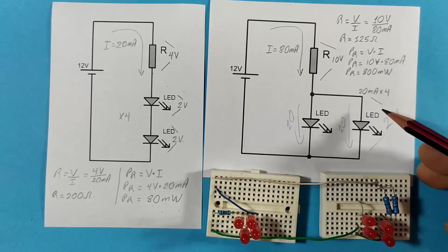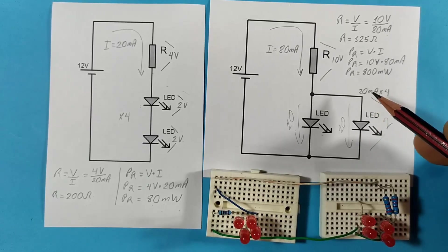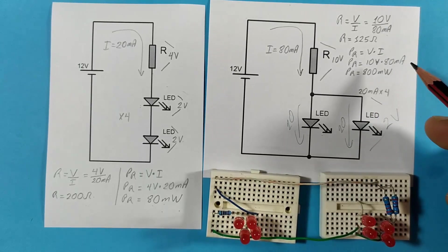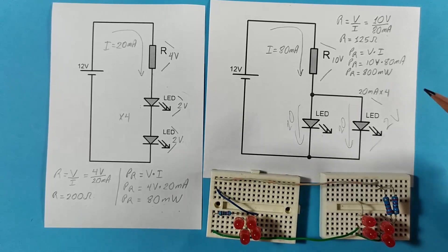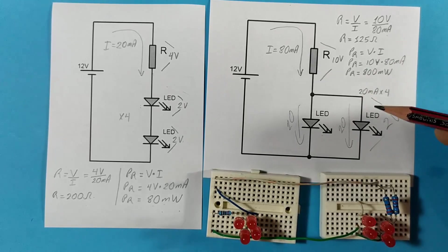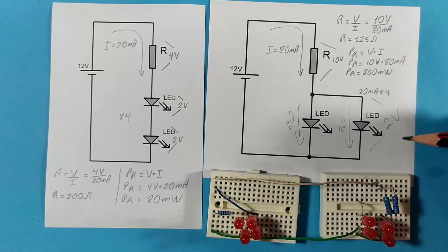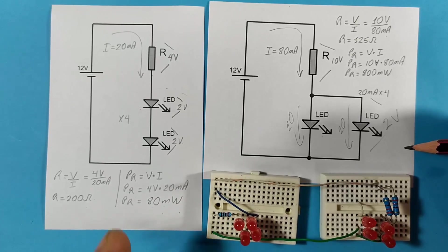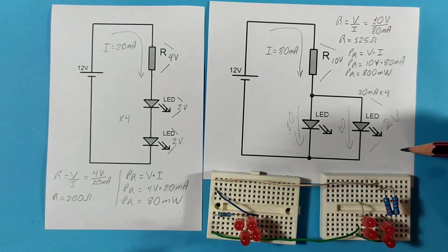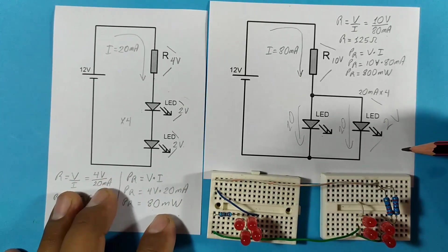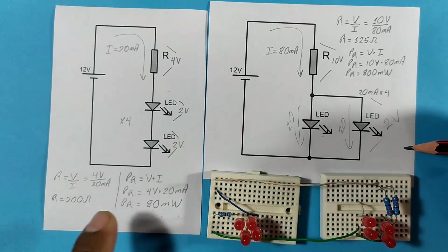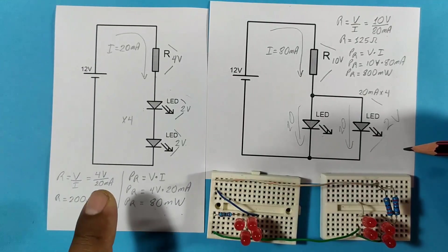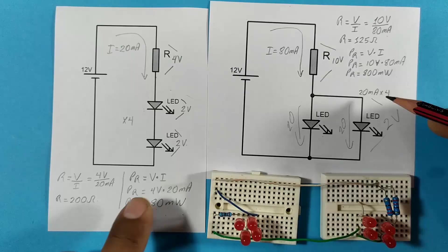So the circuit on the right, this one here, has many things against it. I would not use it to make the circuit with the LEDs, especially if I have several LEDs. In the case of the left side, it is more advisable, and in most cases you will find it with this configuration. Now let's confirm these results of the current of 20 milliamps and the 80 milliamps that pass through each of the circuits.